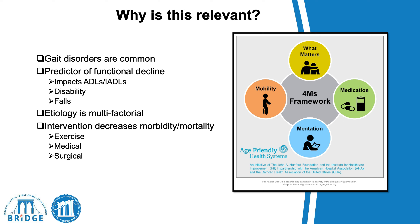This is relevant because our assessment and intervention should translate into an improvement in quality of life and/or life expectancy. Gait disorders are common in older adults and are a predictor of functional decline, which clearly impacts ADLs and IADLs. Functional decline correlates with disability and falls, so gait disorders correlate with disability and falls. The cause is multifactorial and also treatable.